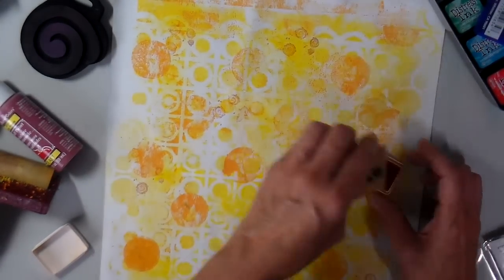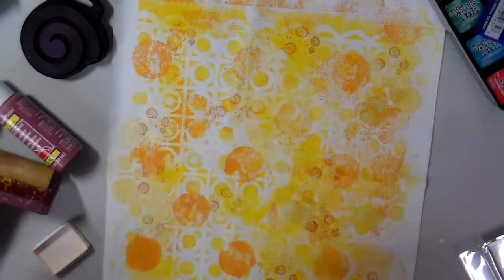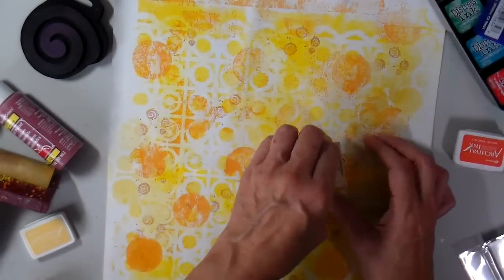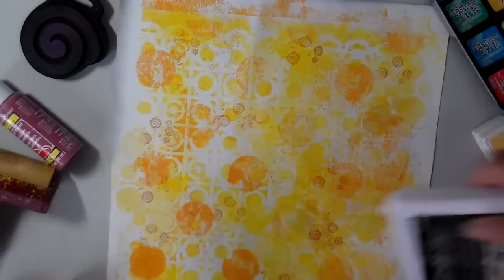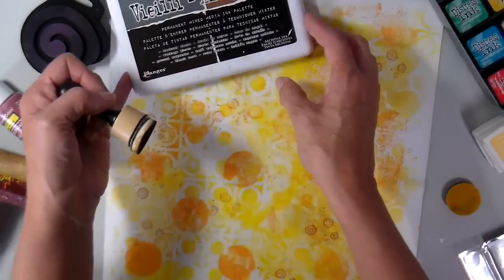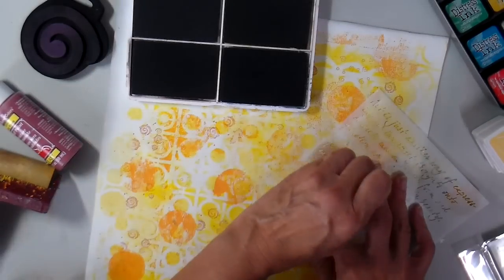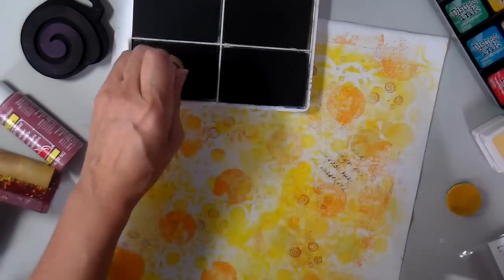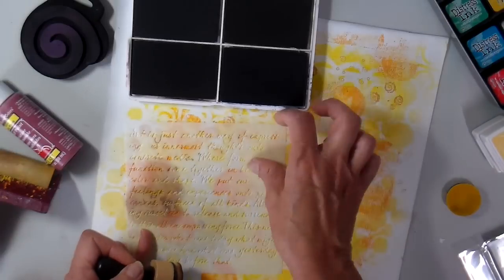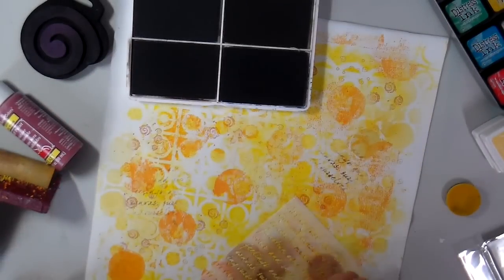Now just adding some stamping. This is just a circle, another little swirls background stamp. These archival inks are wonderful because they are waterproof. Here I'm adding them through another stencil. This is the Artiste stencil and I just like words. You can't really read it, but you can tell that they're words on the background.